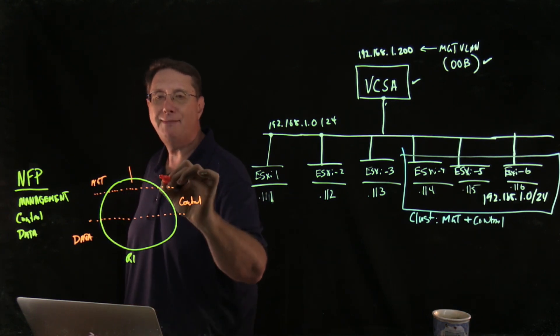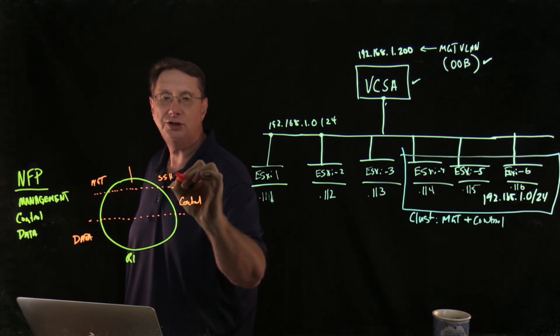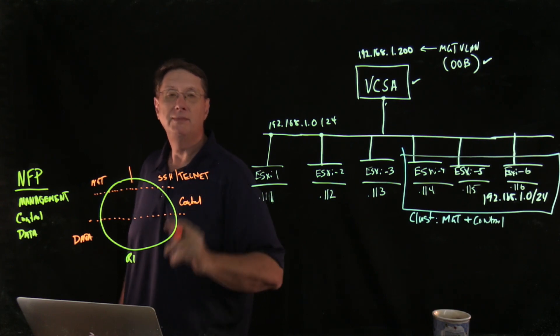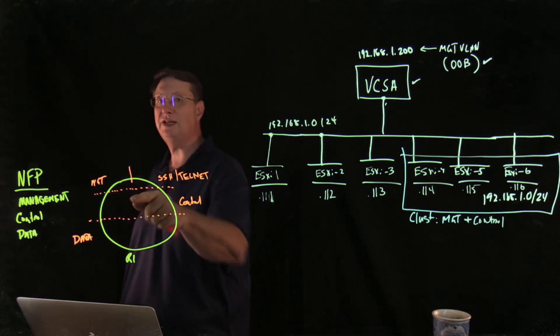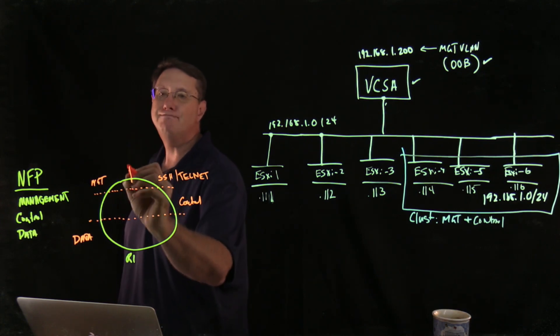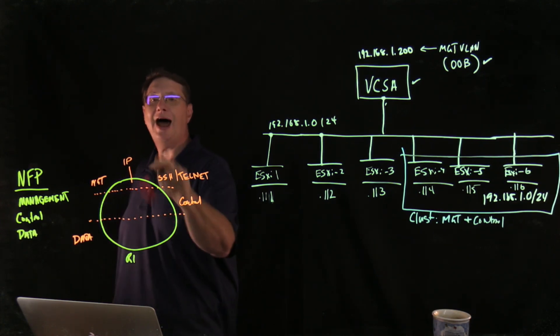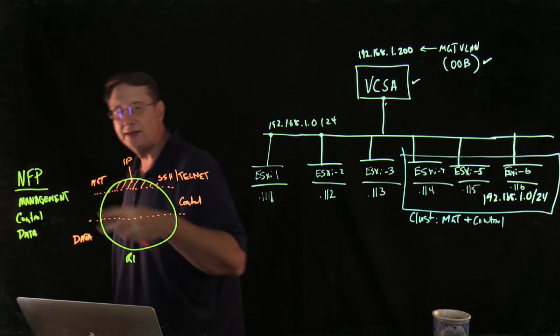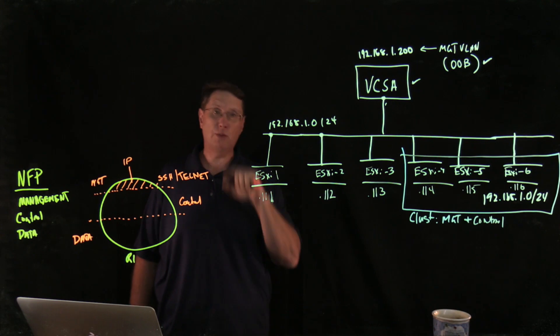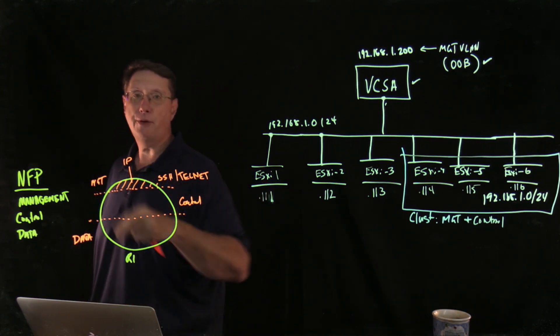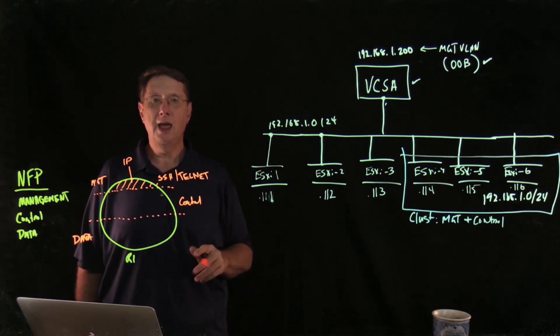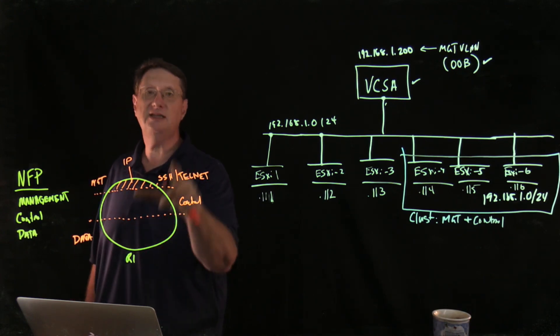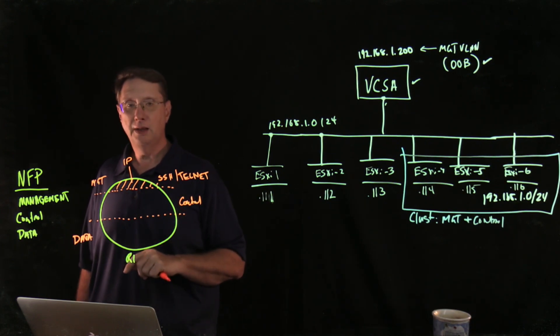As an example, in the management plane, I may run something like SSH or Telnet that's going to allow me to be able to connect as a user or programmatically to this specific device using a management IP address. And if that IP address is not protected based on the governances of network foundation protection, what ends up happening is I'm exposing myself to risk. And it's also important to understand that management means I can actually access the device and I can configure it.